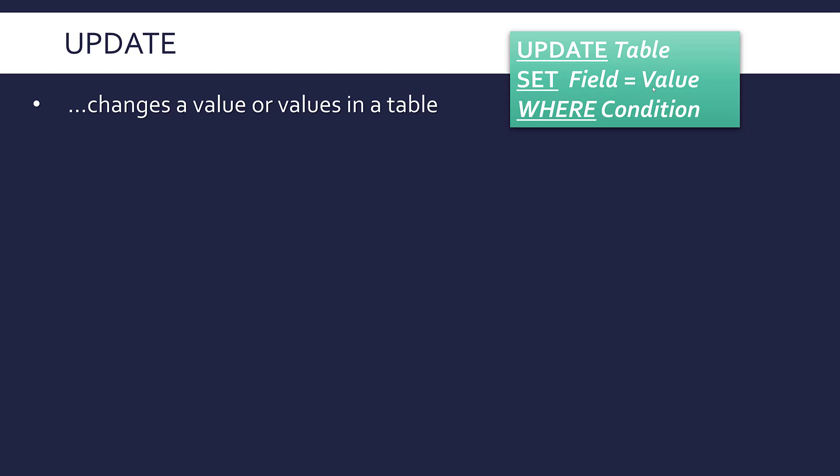In the SET clause, you give a field name and equate it to the new value. You can have multiple changes, in which case you separate them with a comma. Finally, you use WHERE to specify exactly which records should change — you don't have to, but in most cases you're going to need to. I'll show you what happens if you don't in a minute.